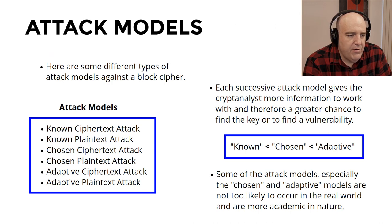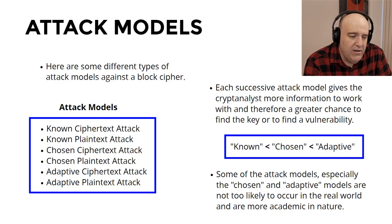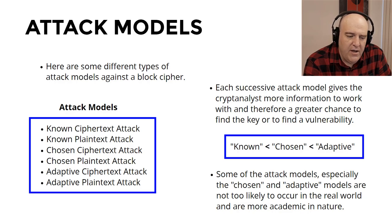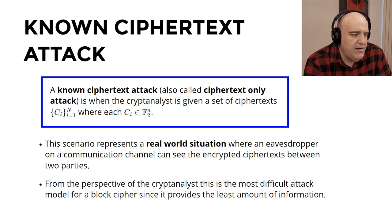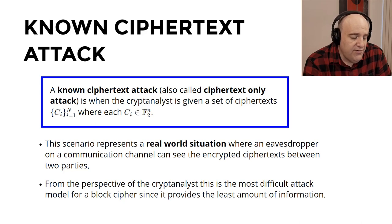Here are six different attack models on block ciphers. Each successive model gives the cryptanalyst more information, and therefore a greater chance to find a key or vulnerability. The known attacks give the least information, chosen attacks give more, and adaptive attacks give the most. Some attack models — especially chosen and adaptive — may not be likely in the real world and are more academic. First: the known ciphertext attack, also called ciphertext-only attack. The cryptanalyst is given a set of ciphertexts Cᵢ for i = 1 to m. This is a real-world scenario since the eavesdropper sees all ciphertexts over the channel. This is the most difficult attack model for the cryptanalyst because it provides the least information.